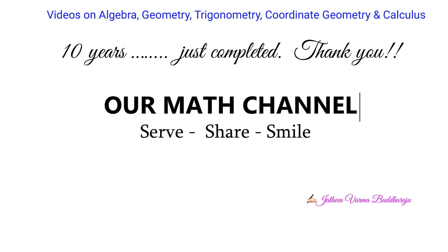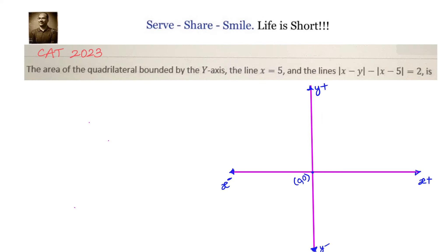Hello friends, welcome back! Hearty welcome to you. Let us look at this problem related to coordinate geometry and quadrilaterals — a CAT 2023 question. The area of the quadrilateral bounded by the y-axis, the line x equals 5, and the lines |x − y| − |x − 5| = 2 is to be found.